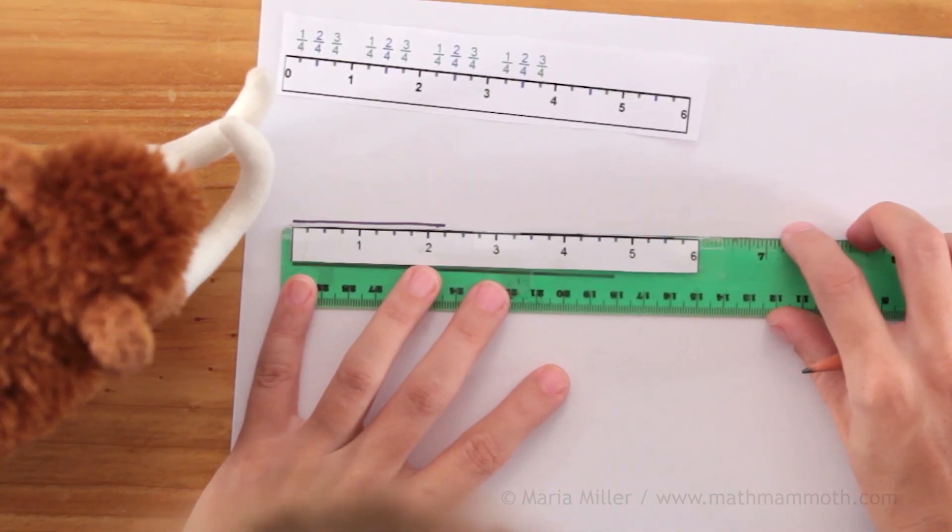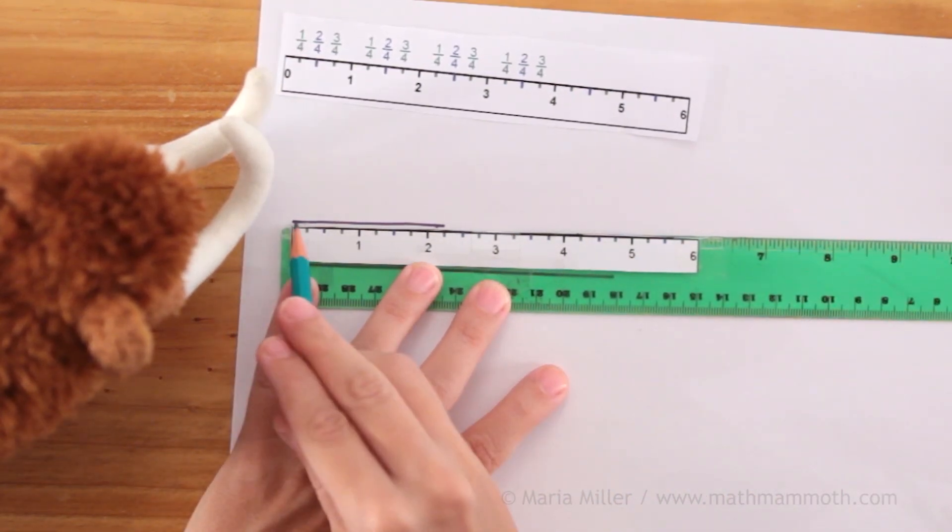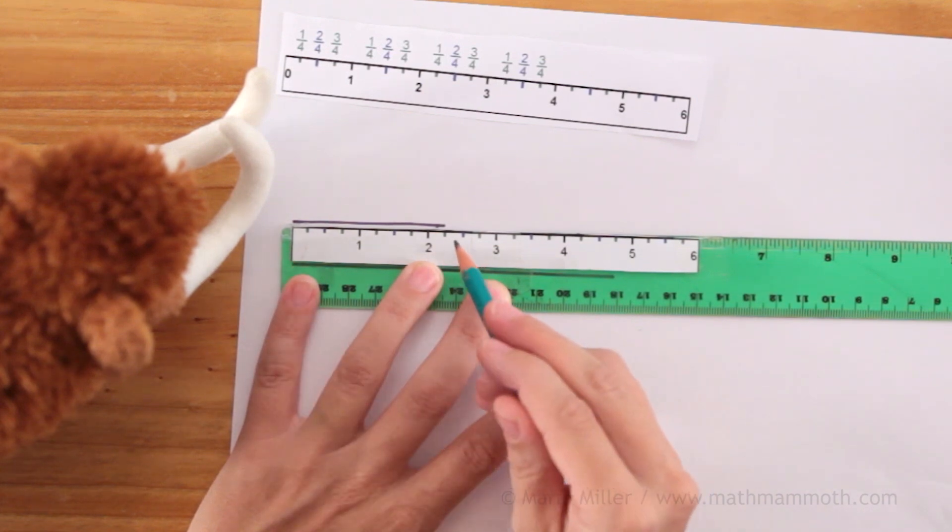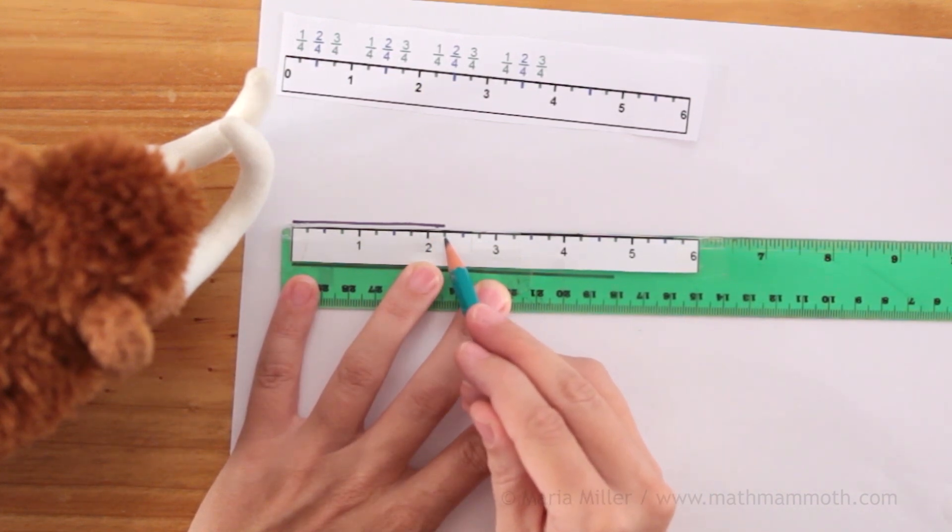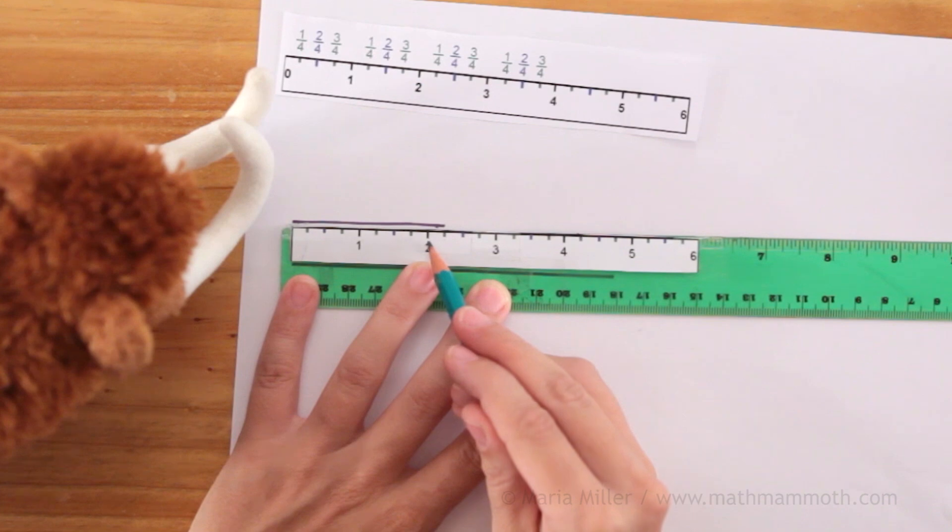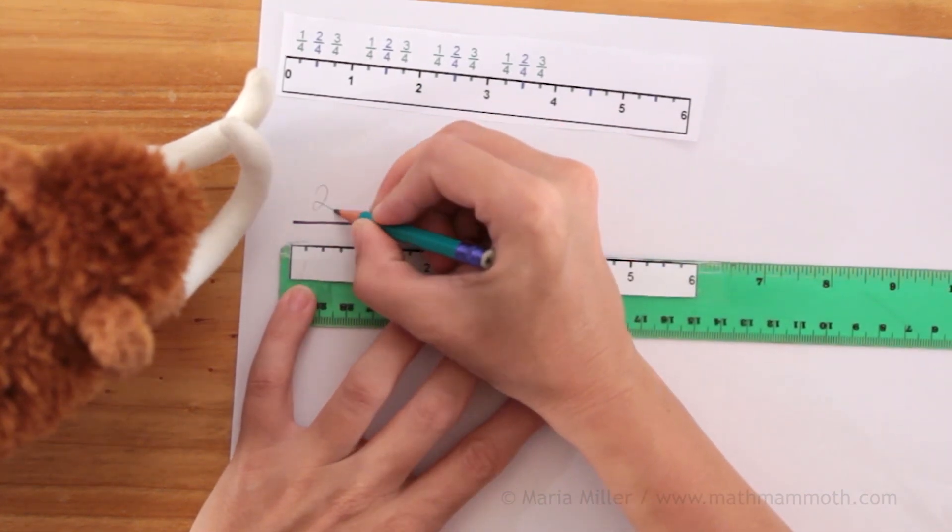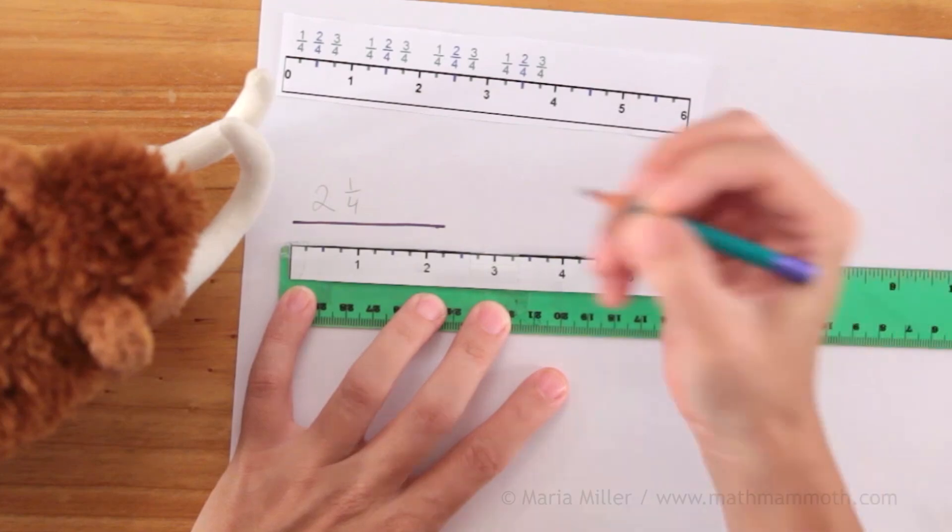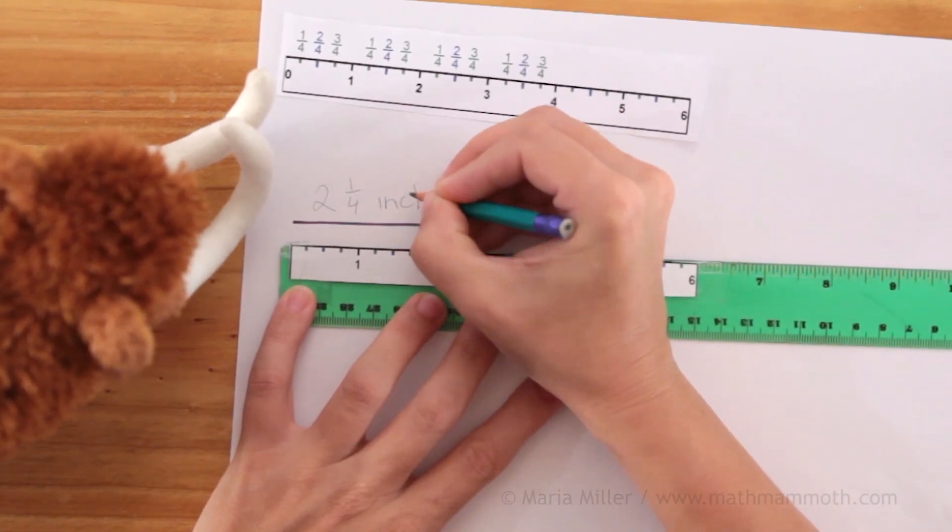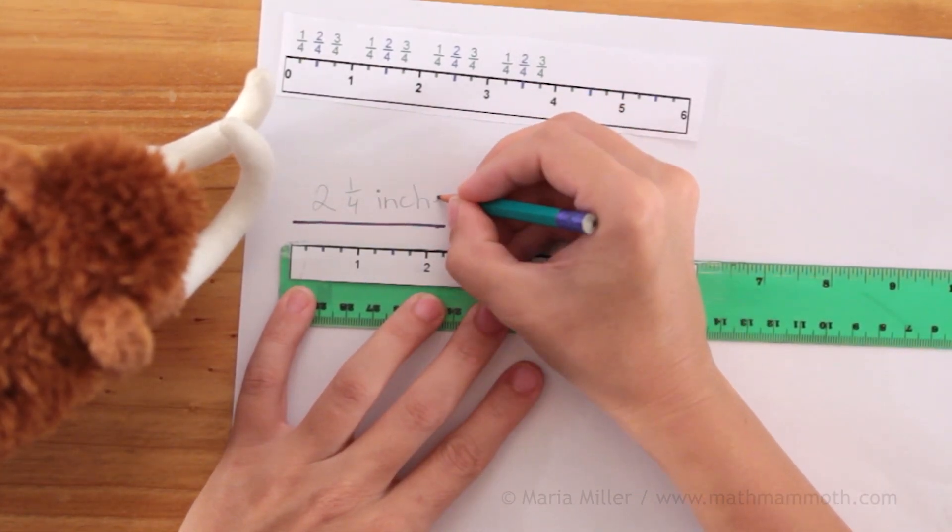I'm measuring this line here. I, of course, again line this end with the zero point. And then we come to two inches into the first mark here. So this is two and one-fourth of an inch. I can write it here: two and then one-fourth, like that, and then inches.